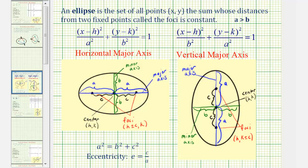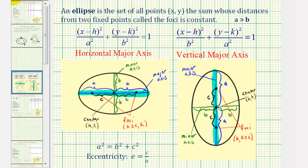Now let's review the standard equation of an ellipse. Every ellipse has two axes: a major axis and a minor axis. The major axis is the longer axis, which can be horizontal or vertical, and the same is true for the minor axis. Notice how the center of the ellipse is where the two axes intersect, and it always has coordinates h, k.